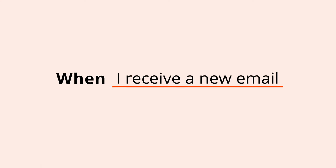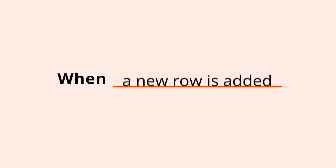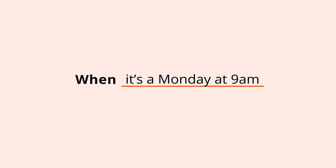The idea behind Zapier is simple. A Zap is made up of two parts: a trigger and an action. A Zap can only have one trigger that starts it. Think of a trigger as telling the Zap when to begin doing something.